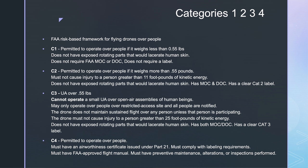Category three, it's for an unmanned aircraft or a drone that is over 0.55 pounds. Under category three, you cannot operate your drone over open air assemblies of human beings. It may operate over people over restricted access sites and all people are notified. The drone does not maintain sustained flight over any person unless that person is participating. The drone must not cause injury to a person greater than 25 foot pounds of kinetic energy. It does not have exposed rotating parts that would lacerate human skin. It has both the MOC and DOC and has a clear label, category three.